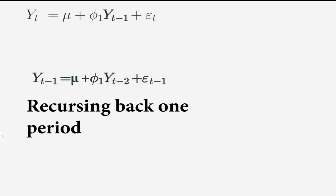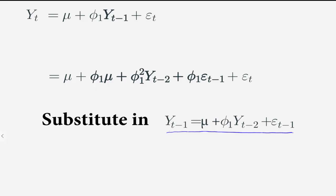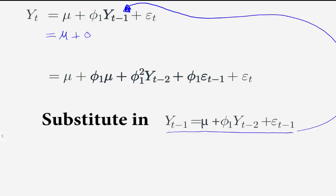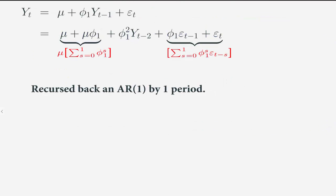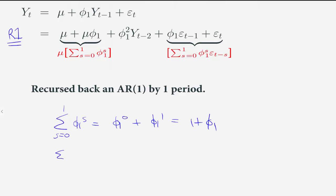To do this, we can use the recursive structure of the AR1 process. We can note that Yt minus 1 also has an AR1 form, and we can then substitute Yt minus 1 into the AR1 process, plug it in, and expand it out. We can then write the two expressions in a summation form — mu plus mu·φ1 written succinctly — and check these are equal by expanding out the sum. Epsilon t plus φ1·epsilon t minus 1 can likewise be expressed in summation form, and as we recurse back repeatedly, a general pattern begins to emerge.